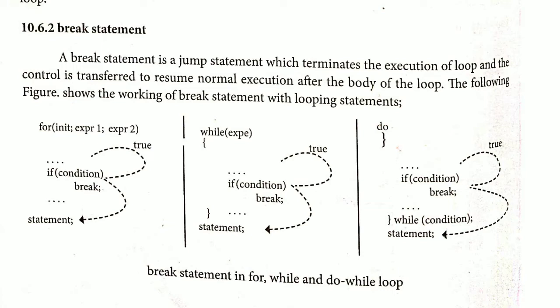For example, if a for loop is executing for 10 times and inside the body of the loop there is an if statement, after finishing the fifth execution the break statement comes into execution. The control will be transferred outside the loop and the remaining five iterations will not be executed. The break statement completely terminates the execution of the loop and brings control outside of the loop.